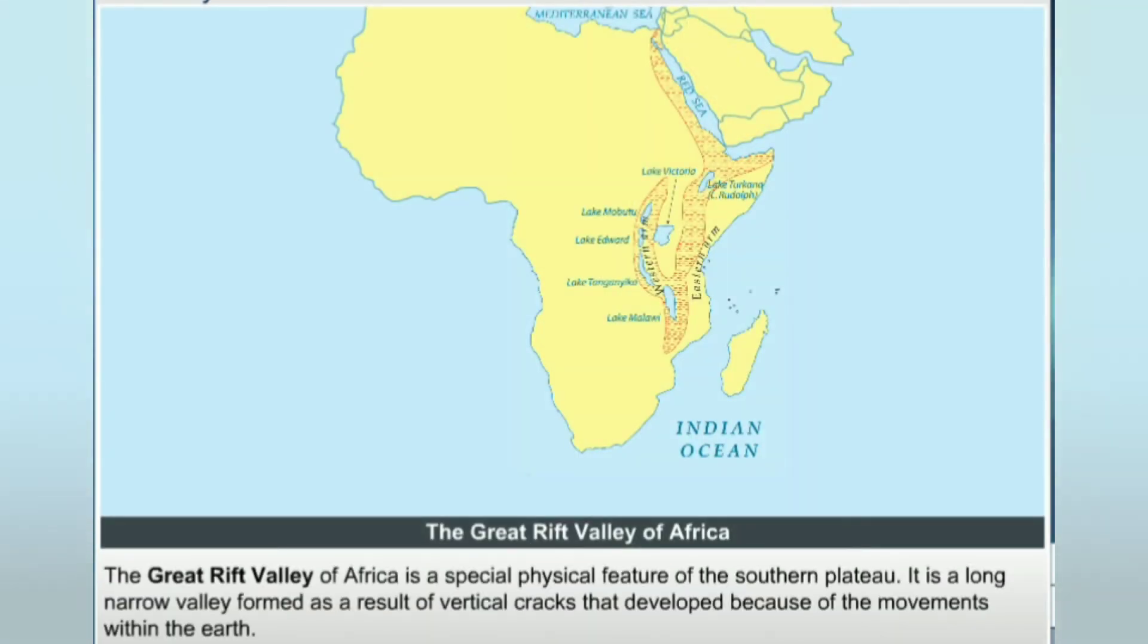The Great Rift Valley of Africa is a special physical feature of the southern plateau. It is a long narrow valley formed as a result of vertical cracks that developed because of the movements within the earth.